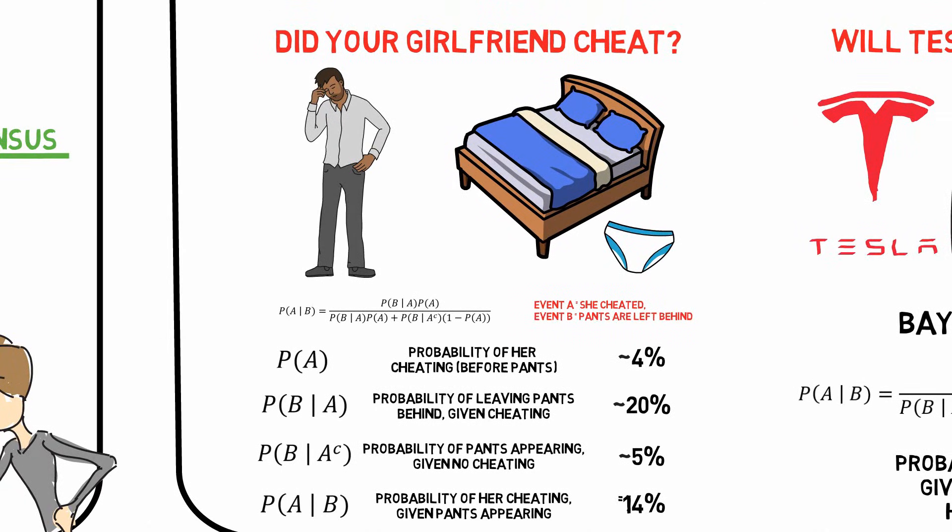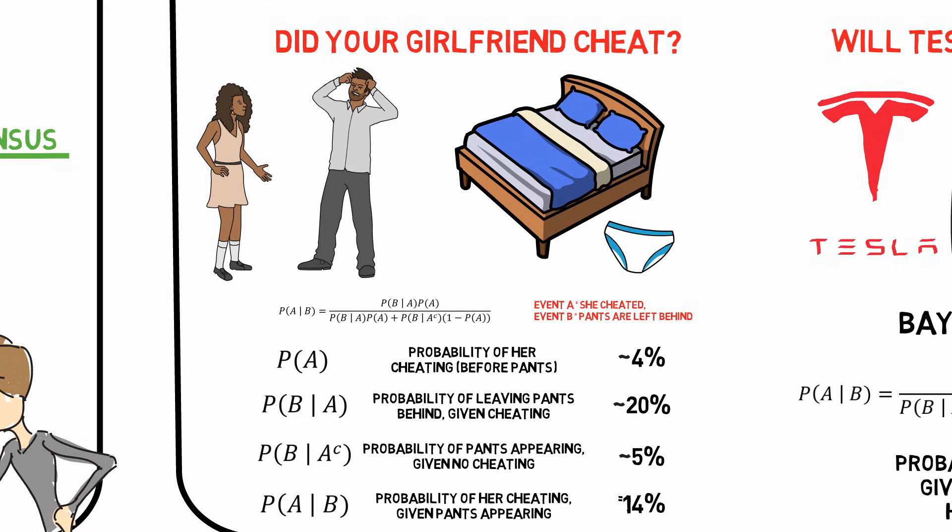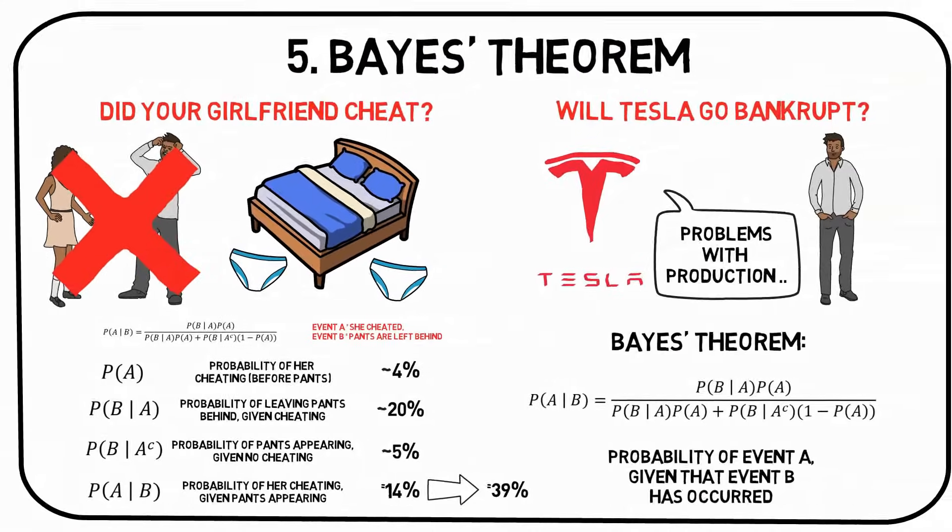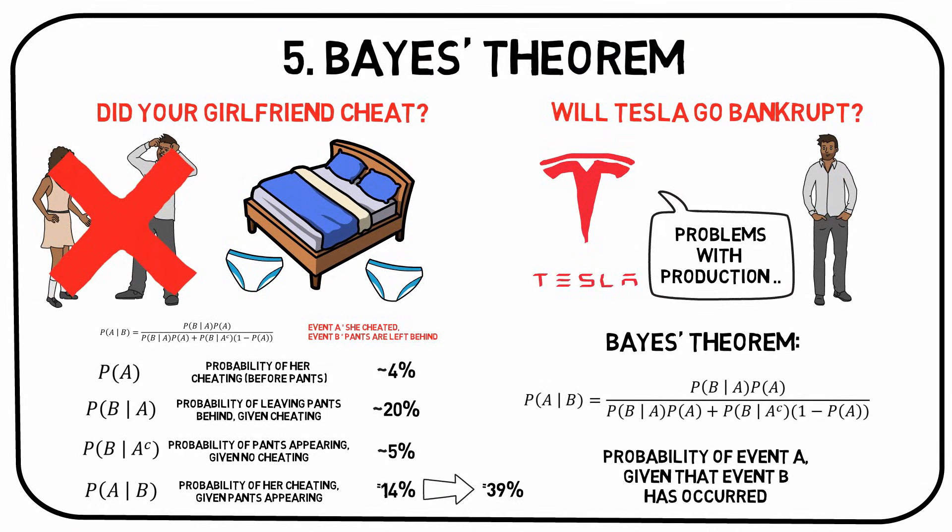With these assumptions, we can calculate that the probability that she's been cheating, given that you found the pants, is 14%. Not so high after all, so please don't confront your girlfriend screaming and crying uncontrollably, just yet. But recognize that it's much higher than our initially expected 4%. If we find another pair of pants a year later, we will have to revise this and update our probability to 39%. Successful predictors in any field recognize this. When new information presents itself, we must update our initial hypothesis.